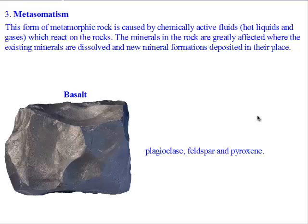Finally, we can talk about metasomatism. This form of metamorphic rock is caused by chemically active fluids. It may be hot liquids or gases which react on the rocks. When this happens, the minerals in the rock are greatly affected — the existing minerals are dissolved and new mineral formations deposited in their place.